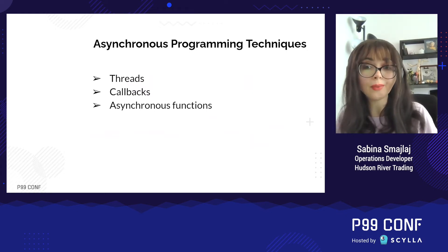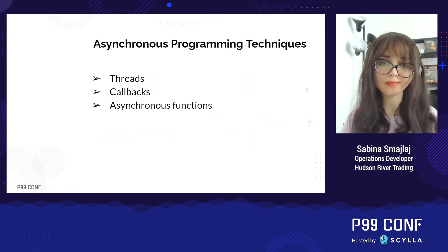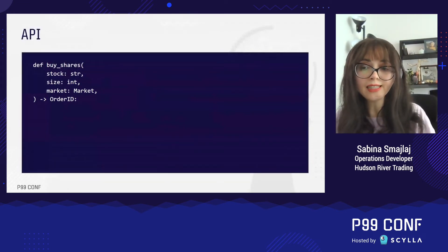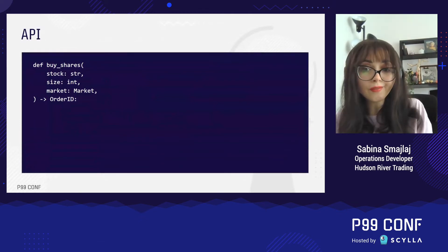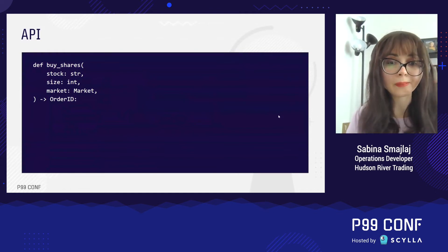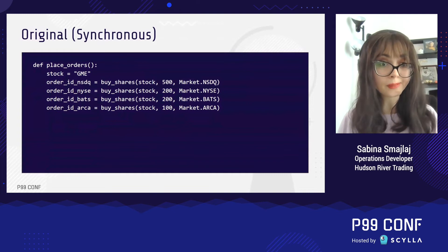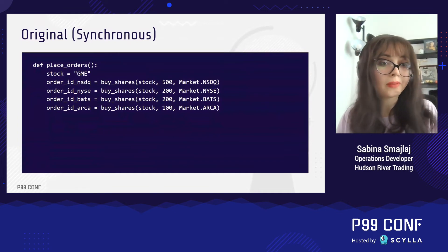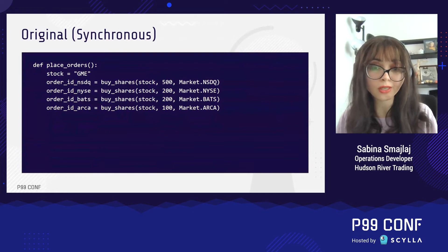There are three techniques that we can use: threads, callbacks, and asynchronous functions. We can start with a trading example. Here is a sample API with a function we'll call buyShares. We can invoke buyShares by giving it the name of a stock, the size we want to buy, and the market that we want to buy it on. We'll get back an order ID. If we want to place multiple orders to multiple markets, we'd have something like this function called placeOrders. PlaceOrders will make multiple calls to buyShares to send all of our orders out for the day.